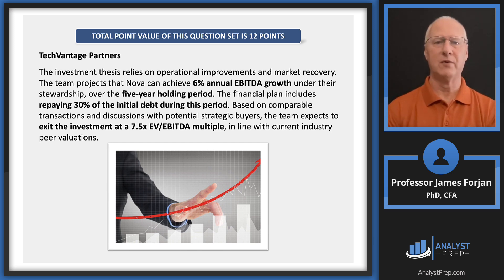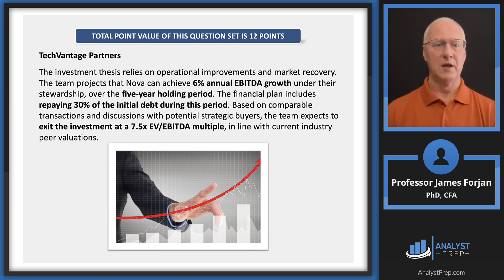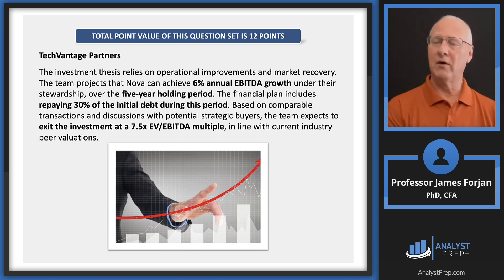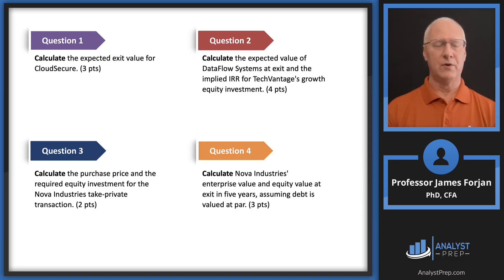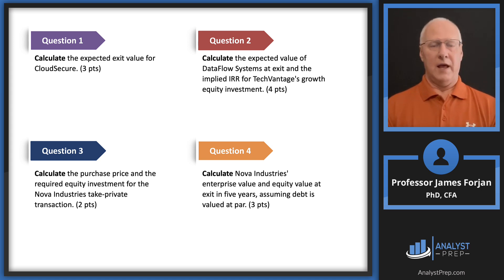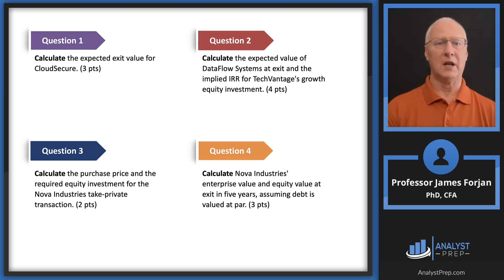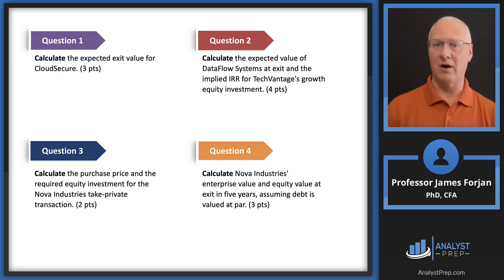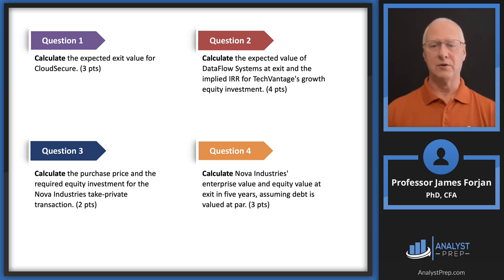There's a 6% annual profitability growth rate and a five-year holding period. The plan includes repaying 30% of the initial debt during this period, and at exit there's yet another multiple. All four questions ask us to calculate: Q1 is Cloud Secure's expected exit value; Q2 is the value and IRR for Data Flow Systems; Q3 is Nova Industries' purchase price; and Q4 builds on that with the capital structure discussion.